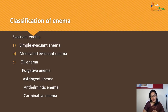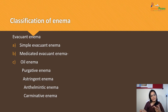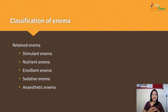Classification of Enema: Evacuent Enema can be classified as simple evacuent Enema, medicated evacuent Enema — which includes oil Enema, purgative, helminthic, and carminative Enema — and cold Enema. Retained Enema includes stimulant, nutrient, emollient, sedative, and anesthetic Enema. These are the different classes of Enema.